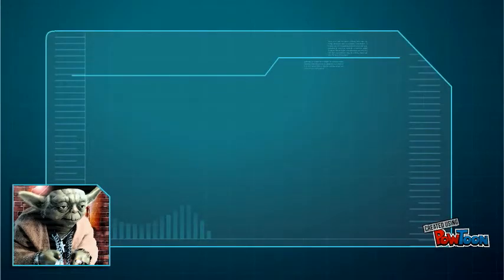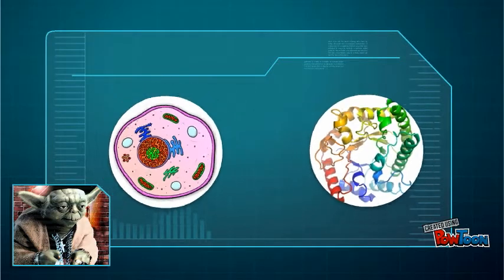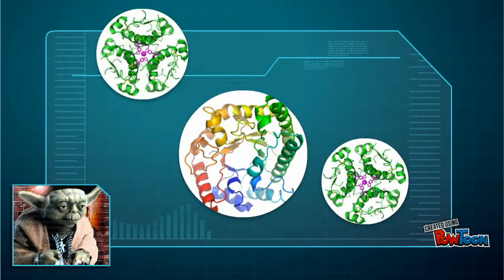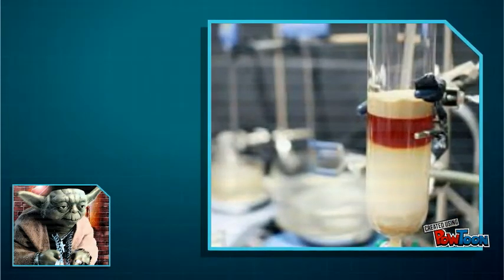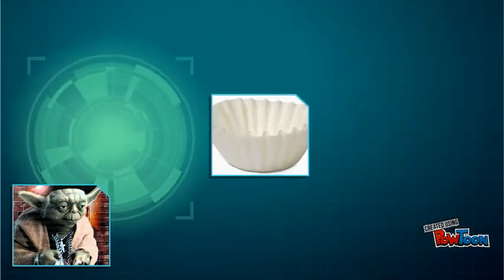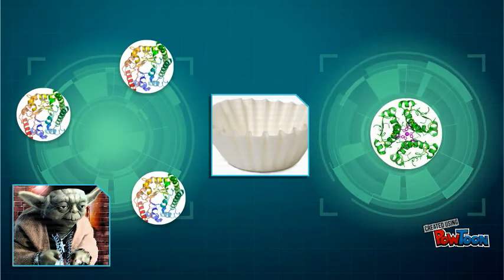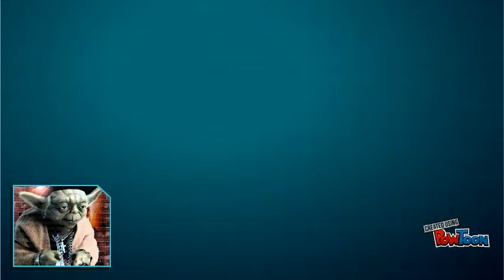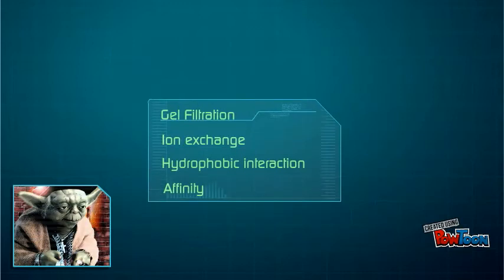We all know that in biotechnology, companies engineer cells to formulate a product such as a protein. But how do we get that product out of a mixed solution of other molecules? Biotech companies use a method called column chromatography. A column generally works as a sieve that filters out undesired molecules. There are a variety of different forms of chromatography with their specific uses, such as paper and thin layer, but here we'll just focus on the four main column types.